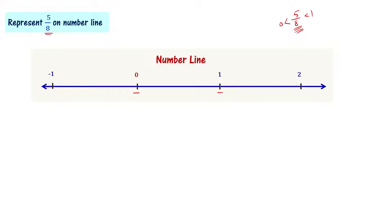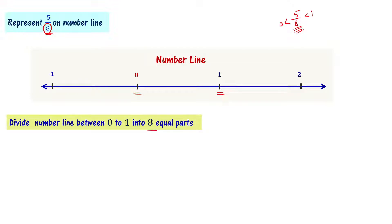To represent 5/8 on the number line, first we have to see what the denominator is. The denominator is 8. So we divide the portion from 0 to 1 on the number line into 8 equal parts — 1, 2, 3, 4, 5, 6, 7, 8 equal parts.